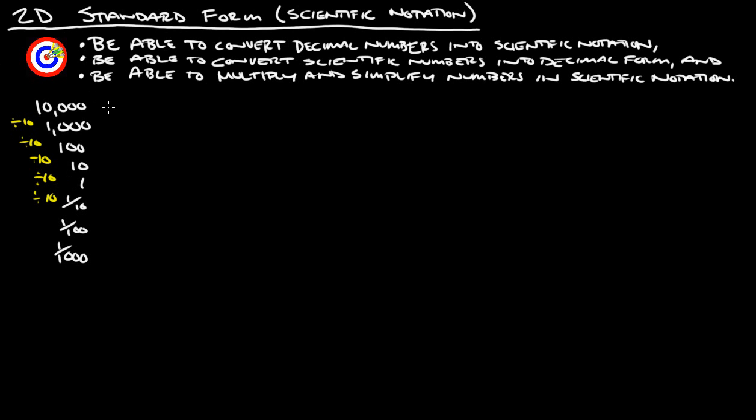Now, another way to write 10,000 is we could write that as 10 to the fourth power. The way I remember how to write numbers in scientific notation is if it's 1 followed by a bunch of zeros, just count the number of zeros before the decimal point. There's 1, 2, 3, 4 zeros, so it's 10 to the fourth.